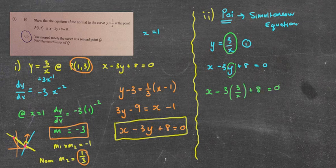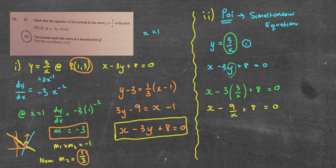So we get x minus 3 lots of 3 over x plus 8 equals 0. All I've done is put 3 over x where y was into the second equation. It's still not easy because it's a fairly hard equation to solve. x minus 9 over x plus 8 equals 0. We've got x on the bottom — that's quite nasty. So I'm going to multiply every single thing by x. x times x makes x squared; times this term they cross out; and 8 times x is 8x. You've formed a quadratic equation.